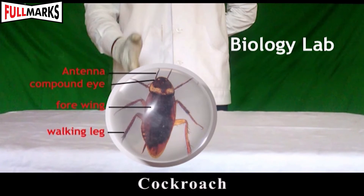Adaptive features: the body is covered with a thick cuticle which gives protection against enemies. It has movable antennae for sensing odour. The head has compound eyes for vision.